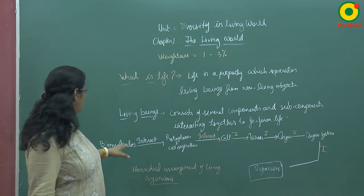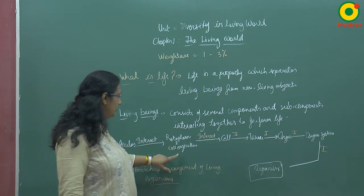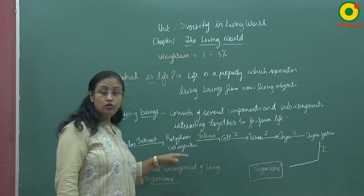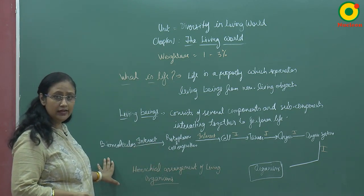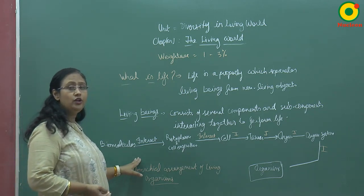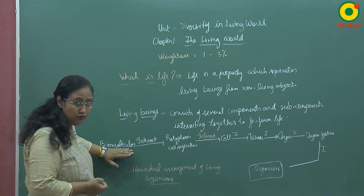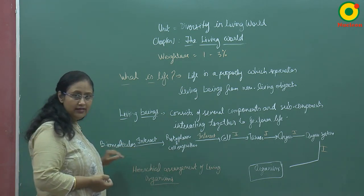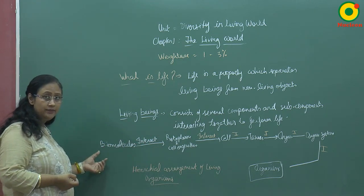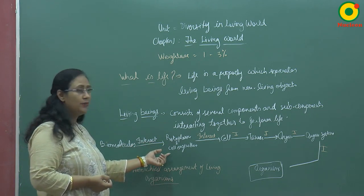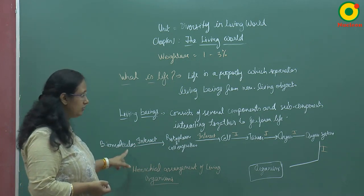Biomolecules are not the constituent of protoplasm and cell organelles. Biomolecules that are at the lower position do not form the constituent of the upper one. Their interaction gives rise to the protoplasm and cell organelles. Protoplasm and cell organelles arise by the interaction of biomolecules. The same case applies here — cell is not the constituent of protoplasm and cell organelles.